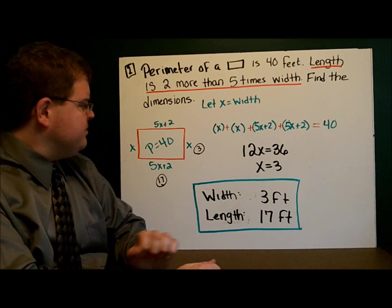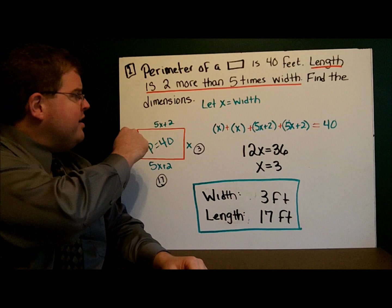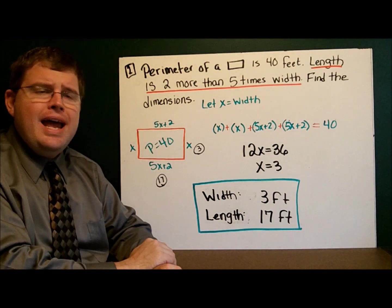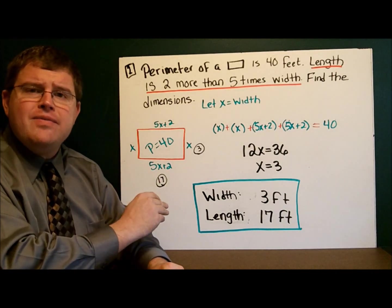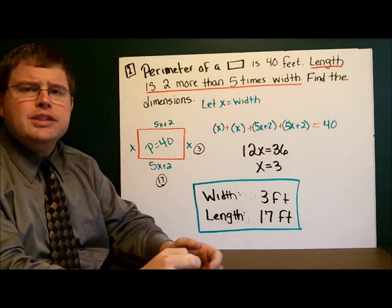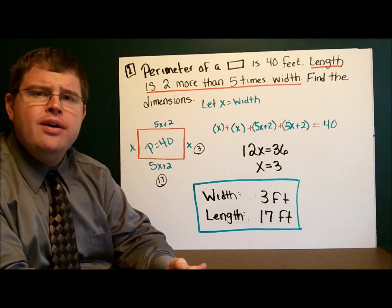Let's draw our picture. Here's my rectangle. And I know nothing about the width, so I'll call that x. The length is two more than five times that, so 5x plus 2, 5x plus 2. And my perimeter is 40.